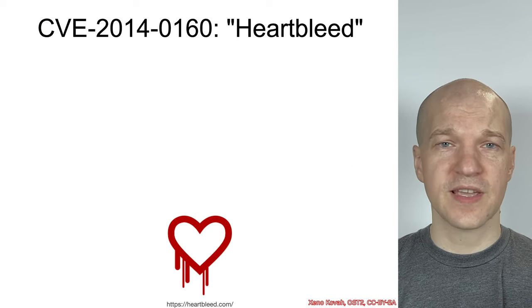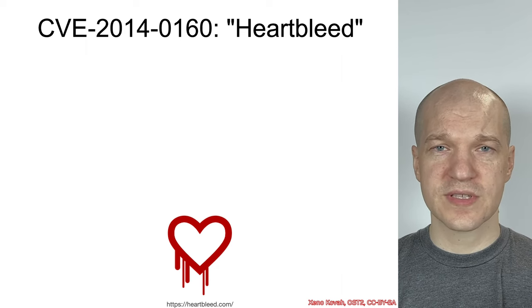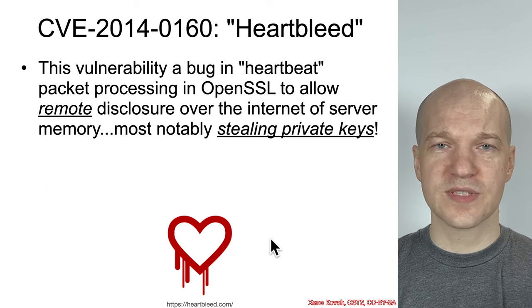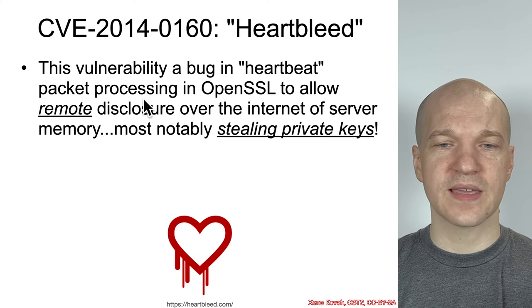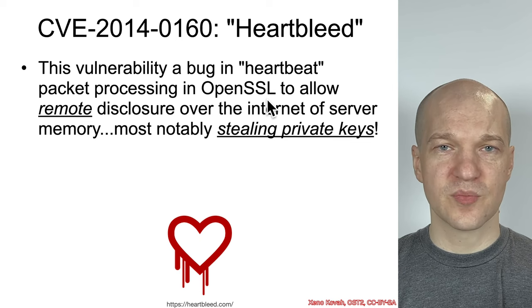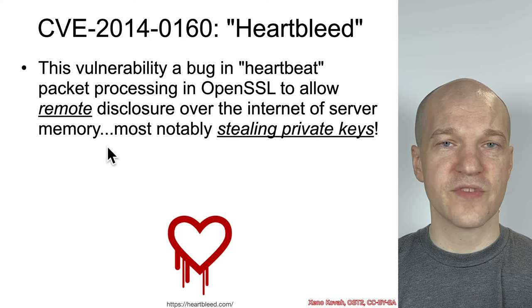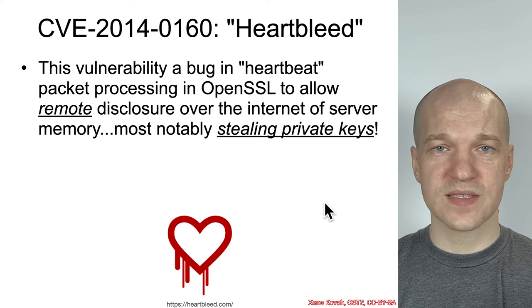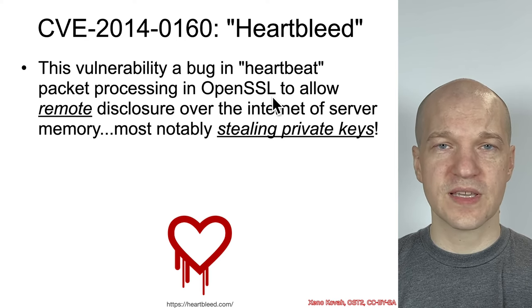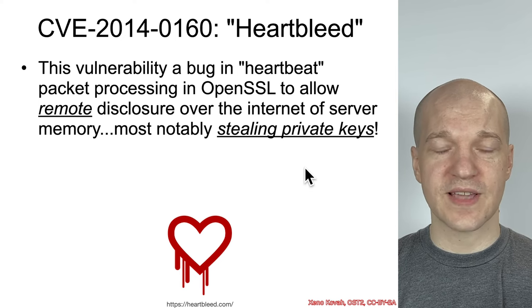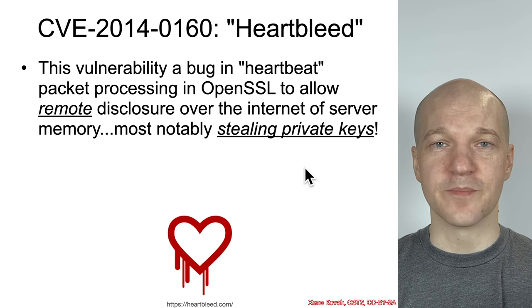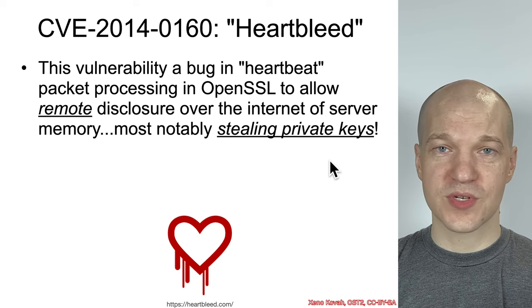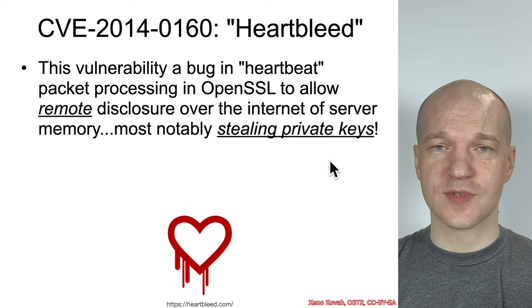Let's return to the idea of infoleaks just allowing you to steal contents from memory. There's a very famous vulnerability named Heartbleed, with its particular logo and website. This was a bug in the handling of heartbeat packets in the OpenSSL library. This bug allowed for remote disclosure over the internet of things like private keys from a server running OpenSSL — whether a VPN server or a web server. This vulnerability would allow an attacker to reach out and steal memory from that machine, including private keys, allowing them to impersonate a website while browser lock icons showed everything was secure.